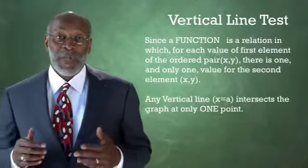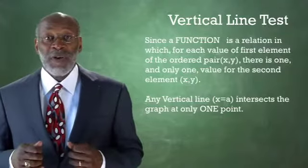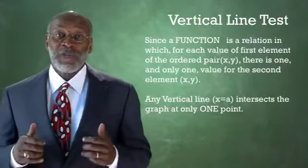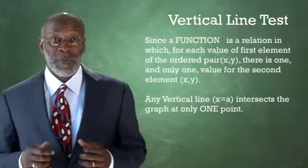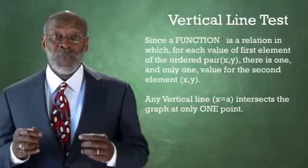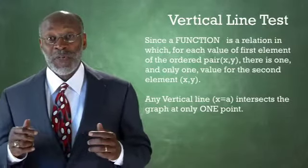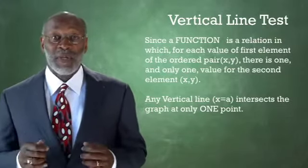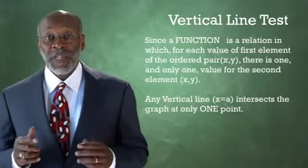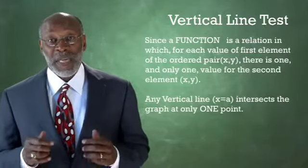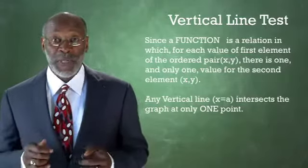Since a function is a relation in which, for each value of the first element of the ordered pair, there is one and only one value for the second element of the ordered pair, then any vertical line intercepts the graph at only one point.